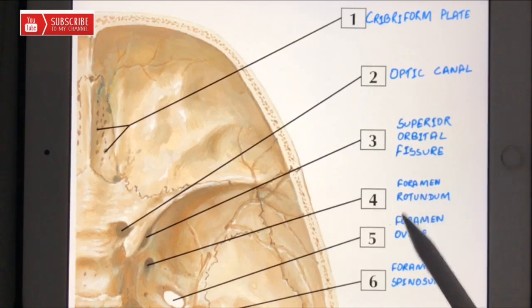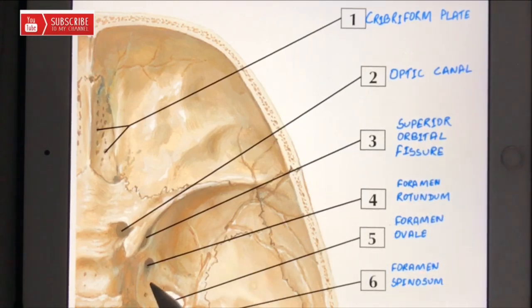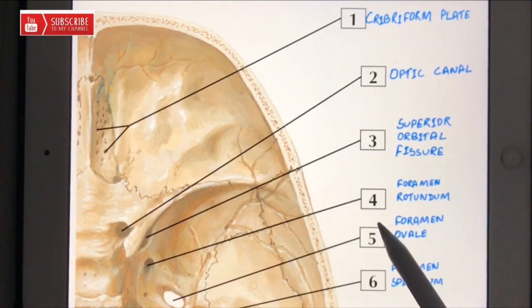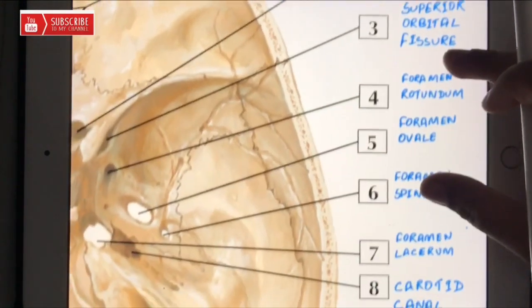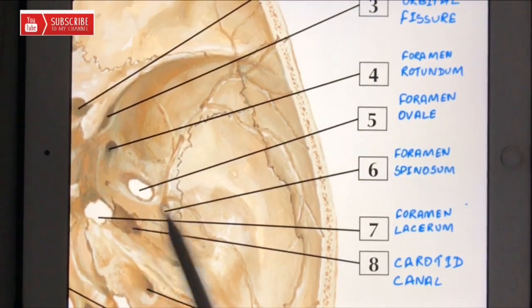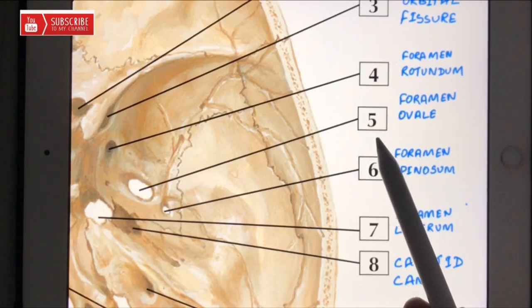Now comes to number four. Number four is the foramen rotundum, and through foramen rotundum the maxillary nerve passes, which is the second division of the trigeminal nerve. Now come to the fifth. Number five is foramen ovale.